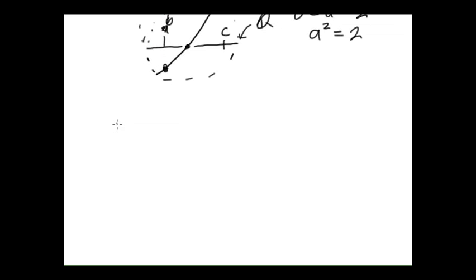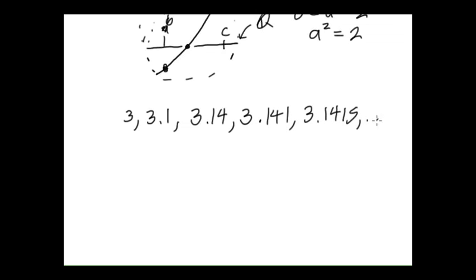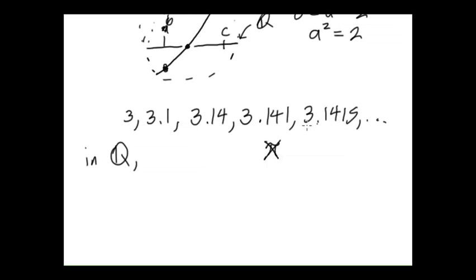Another example is in the convergence of sequences. Consider the following sequence of rational numbers — it should be pretty obvious what the pattern is, and so on. Spoiler alert: it converges to pi. Or at least it would. But we've confined ourselves to the world of Q. Because we know — and maybe we'll prove it in these videos — that pi is irrational. So these numbers are getting closer and closer and closer to something, but that something isn't in the set. So we really, in all honesty, can't say that it converges in Q.